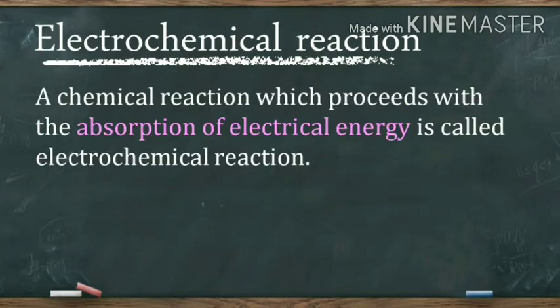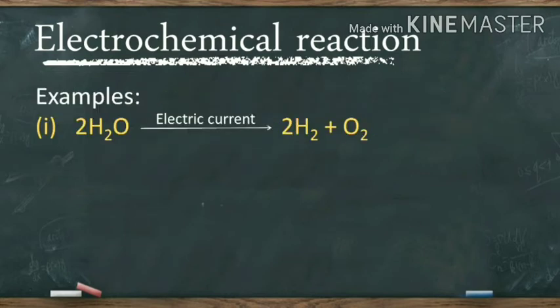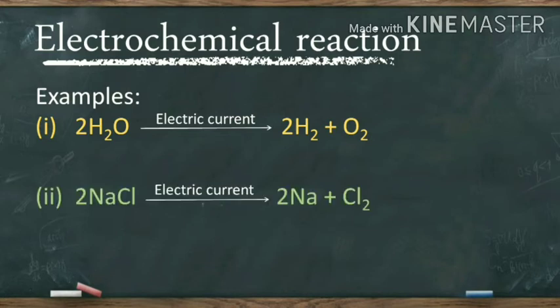The fourth type is the electrochemical reaction. As the name indicates, an electrochemical reaction is a reaction which proceeds with the absorption of electrical energy. For example, water dissociates into hydrogen and oxygen when electric current is passed through acidulated water. When electric current is passed through sodium chloride, the formation of sodium and chlorine takes place.